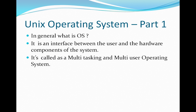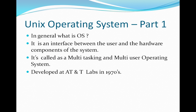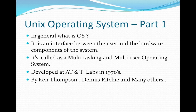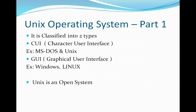Coming to the development — who developed UNIX? It was developed at AT&T labs in the 1970s by Ken Thompson, Dennis Ritchie, and many others who were involved in the development of this UNIX operating system. It is also classified into two types.